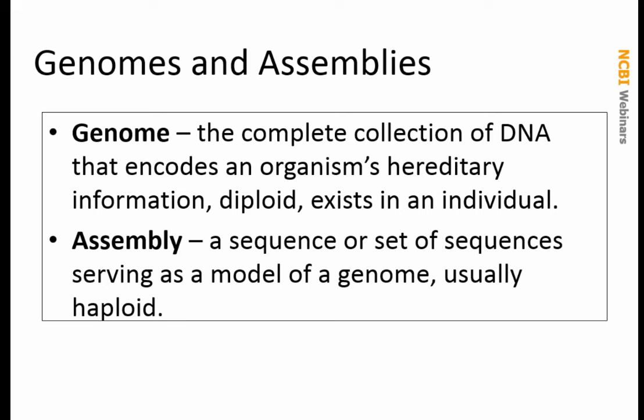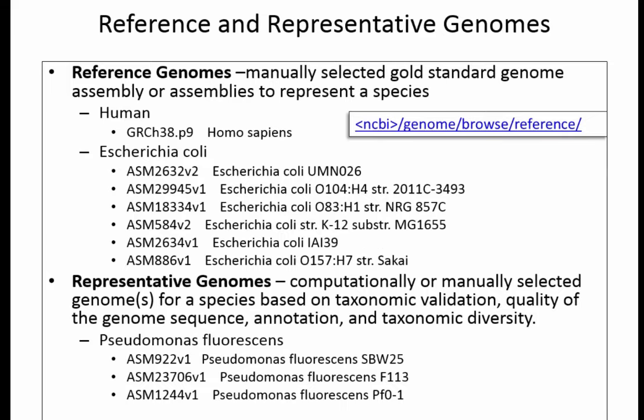Reference genomes are the gold standard genome assembly or assemblies to represent a species. For humans, that's GRCh38 patch 9. For Escherichia coli, there are six different reference genomes representing different strains — including laboratory and pathogenic strains — to capture the genetic diversity of that organism. Representative genomes tend to be for organisms where a reference genome hasn't been designated yet. These are computationally selected based on taxonomic validity, genome sequence quality, annotation quality, and representation of taxonomic diversity within a species.